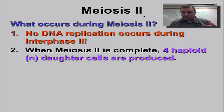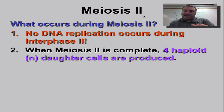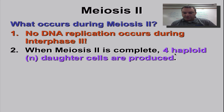During meiosis number two, there's no replication at all. When you divide the second time, that's when you reduce the number. And when you're done, you're going to have four complete daughter cells.